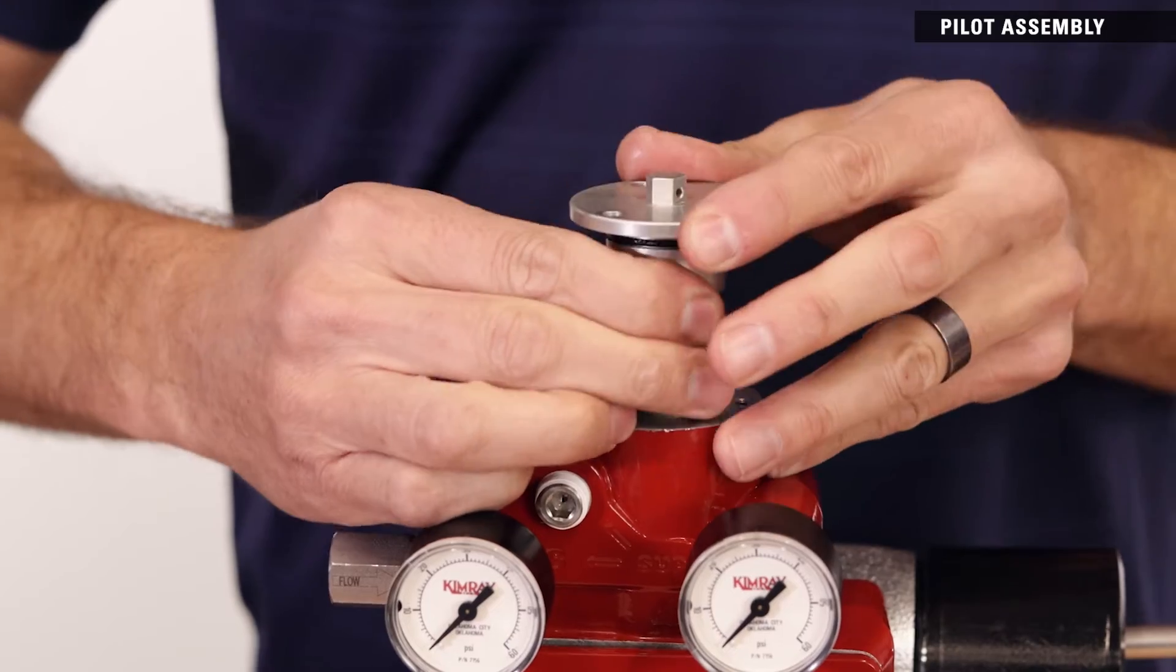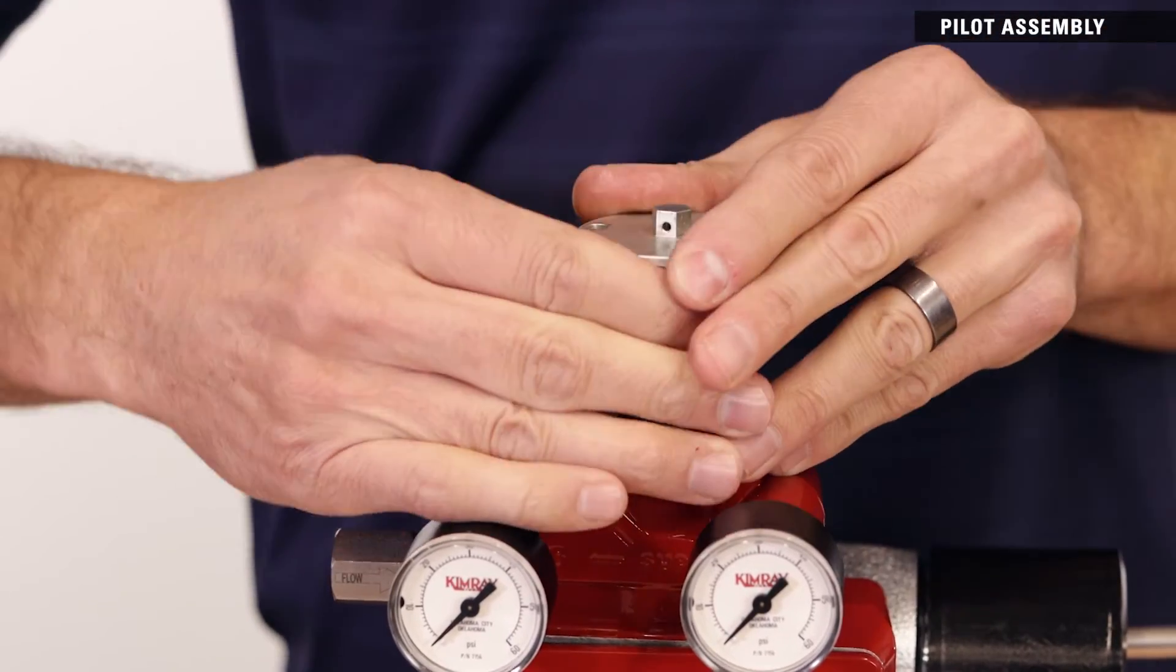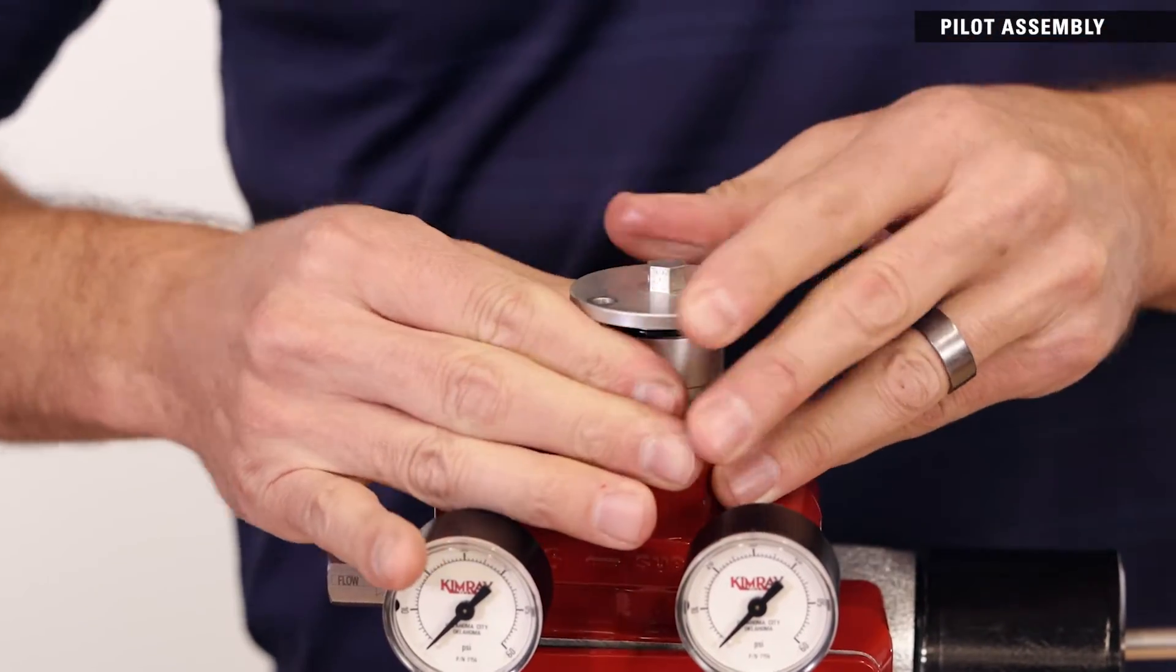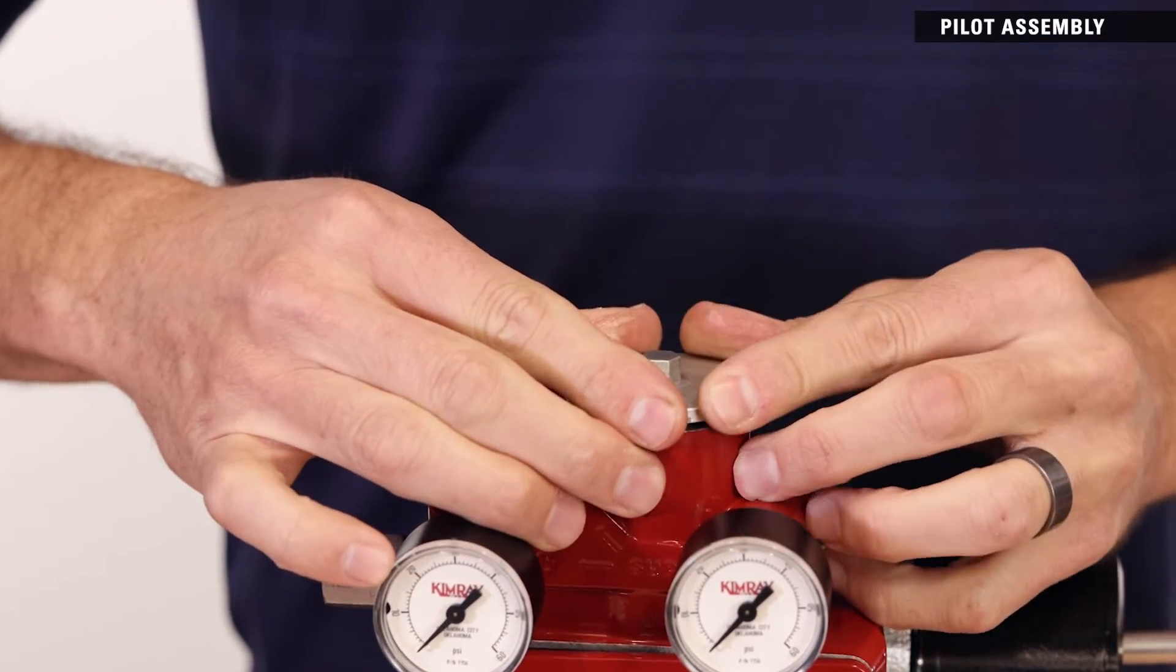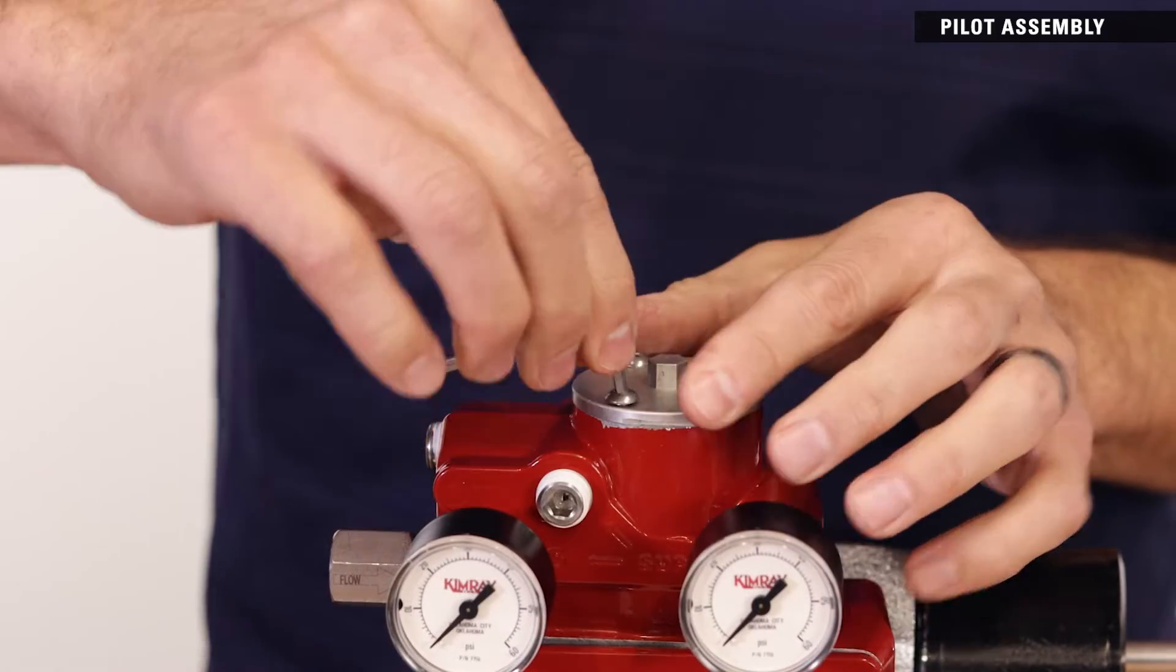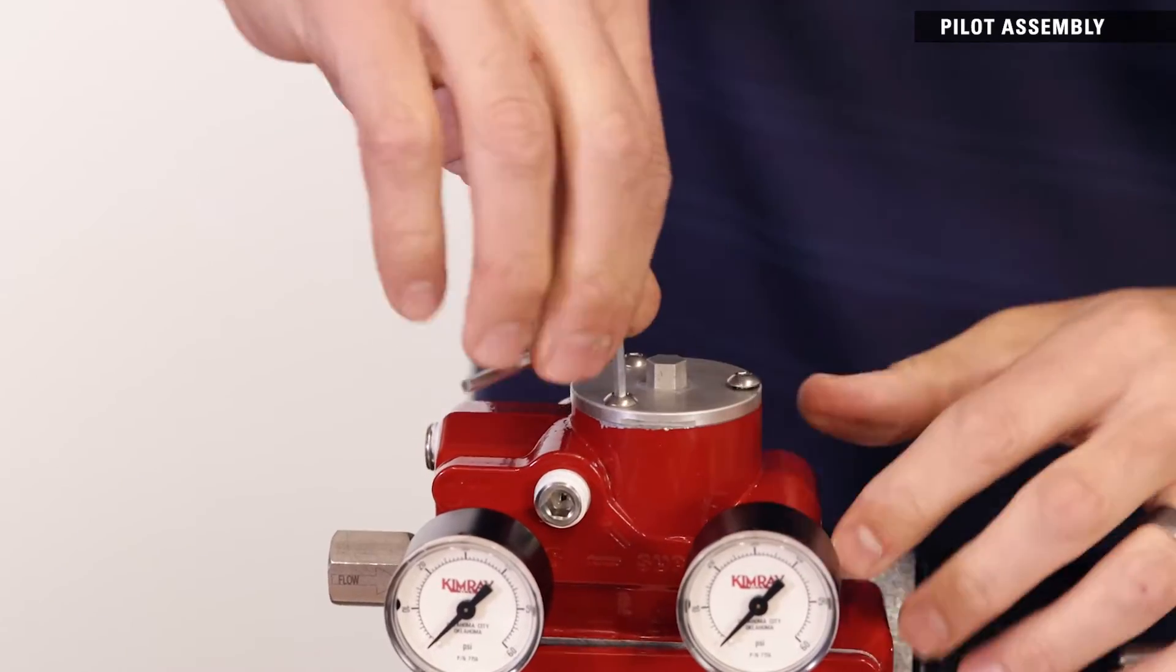Insert the pilot cartridge into the enclosure, rotating clockwise to avoid unthreading the pilot as it's inserted into the enclosure. Line up the holes in any orientation and install the three socket screws with the 1-8 inch hex key.